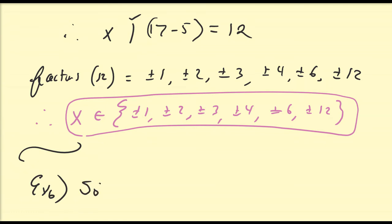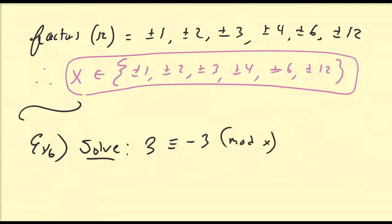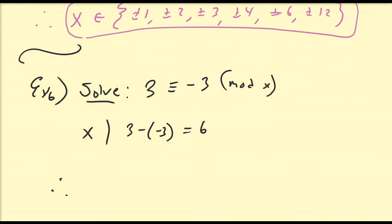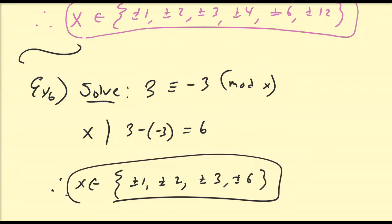Solve 3 is congruent to negative 3 modulo x. That means x must divide into 3 minus negative 3, which is equal to 6. So x must belong to the set of factors of 6: plus or minus 1, plus or minus 2, plus or minus 3, and plus or minus 6.